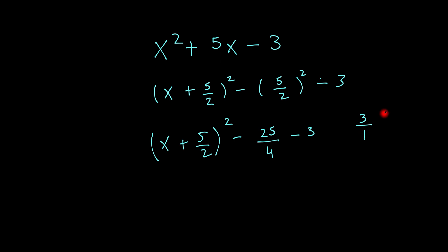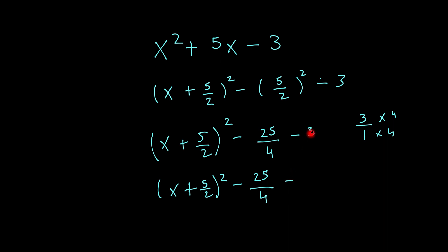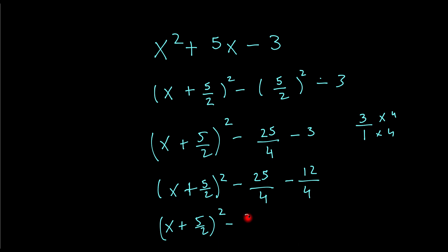And remember to change the 3 with a denominator of 4, so we just do 3 over 1 and multiply the top and the bottom by 4. So then we get x plus 5 over 2 all squared minus 25 over 4, and this would be minus — so that's 3 times 4 is 12, that'll be 12 over 4. The final answer would be x plus 5 over 2 all squared minus 25 minus 12 over 4, so minus 37 over 4. And that would be my final answer.